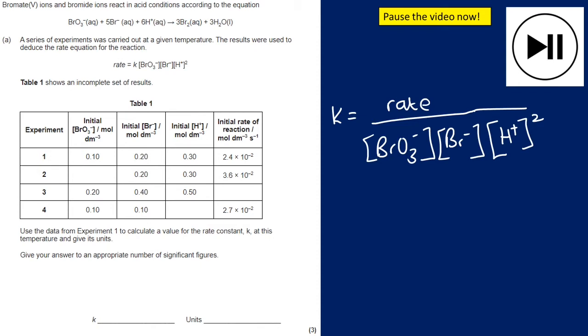We're going to take the results from experiment one because we do have all the data from experiment one, and it's going to be 2.4 times 10 to the minus 2 divided by 0.1 multiplied by 0.2 multiplied by 0.3 squared. It does tell us to give our answer to the appropriate number of significant figures. All of this data is to two significant figures, so we use two significant figures. If the data was to different levels of significant figures, then you use the lowest number. So the answer here is 13.